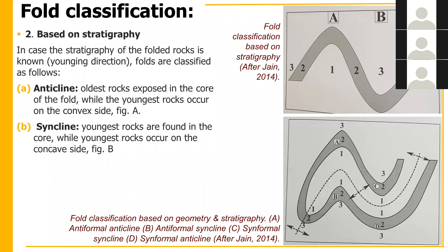The second classification is based on stratigraphy. If we know the stratigraphy of an area — meaning we know the younging direction — then we use the terms anticline and syncline instead of antiform and synform. In the example shown, beds are numbered 3 to 1, where 1 is the oldest and 3 is the youngest.